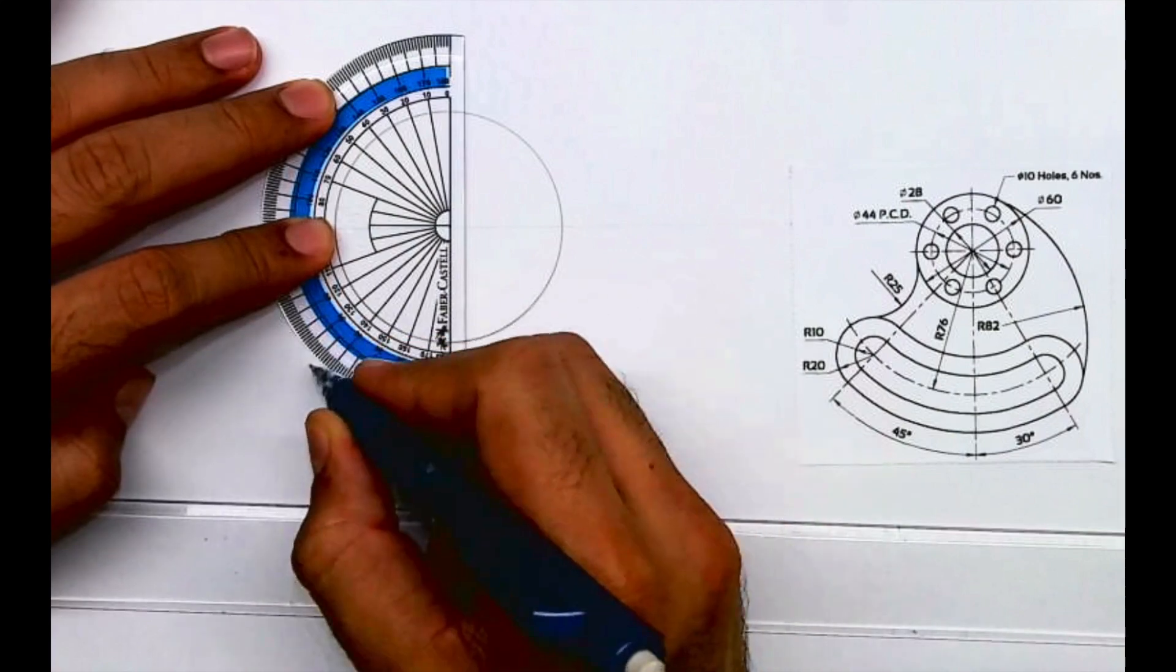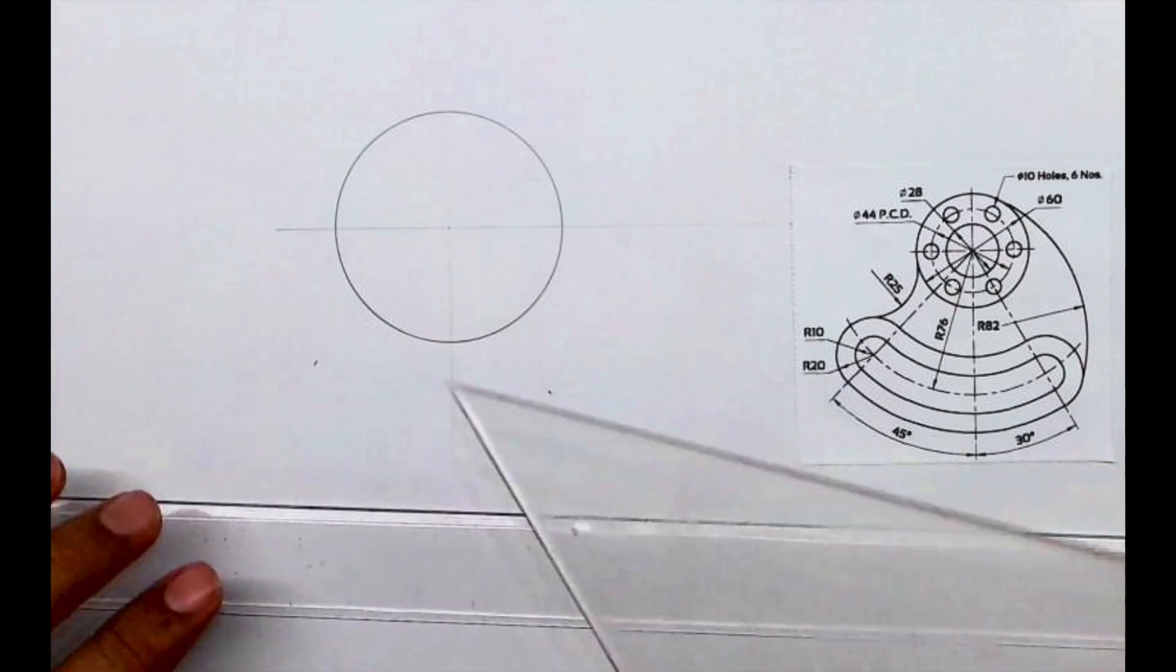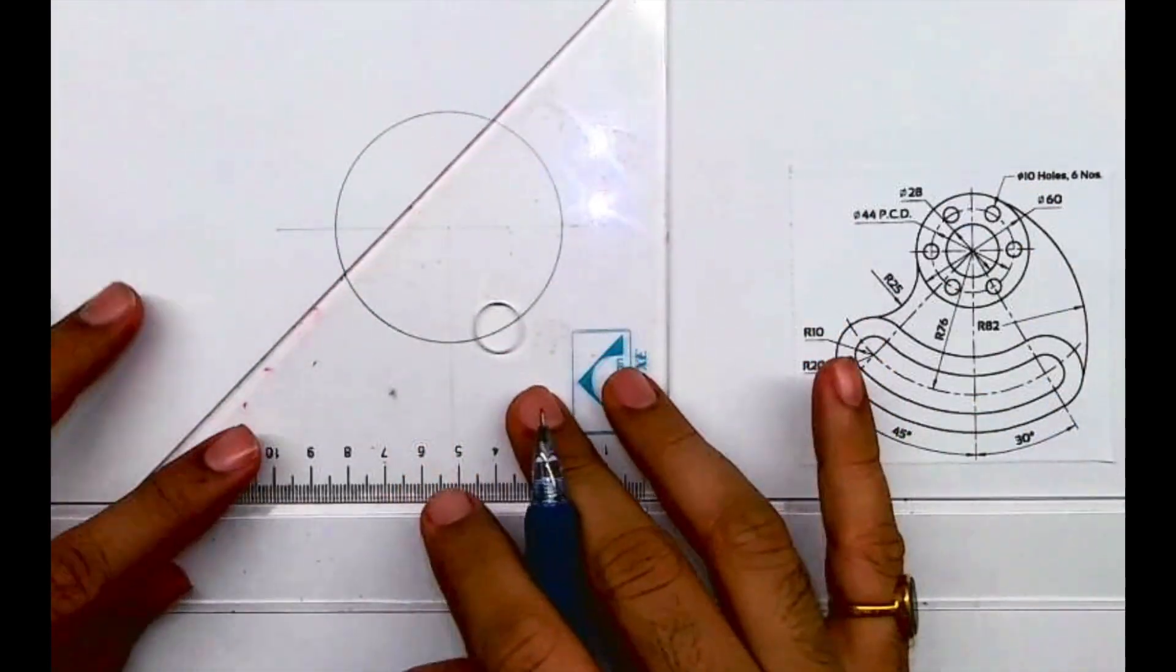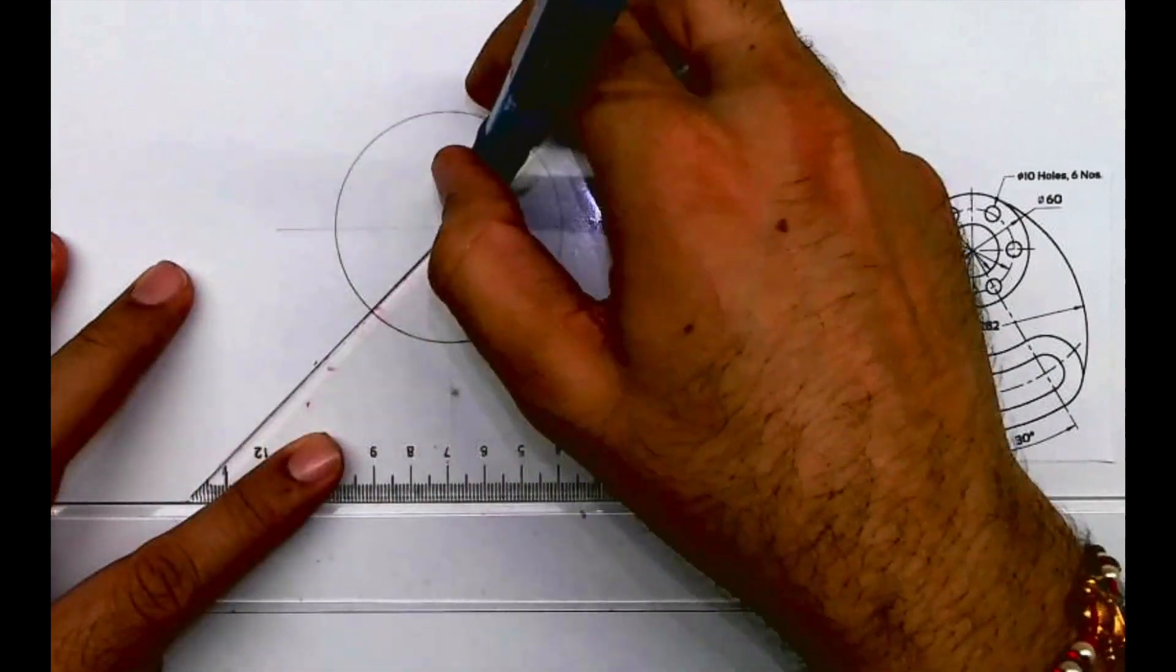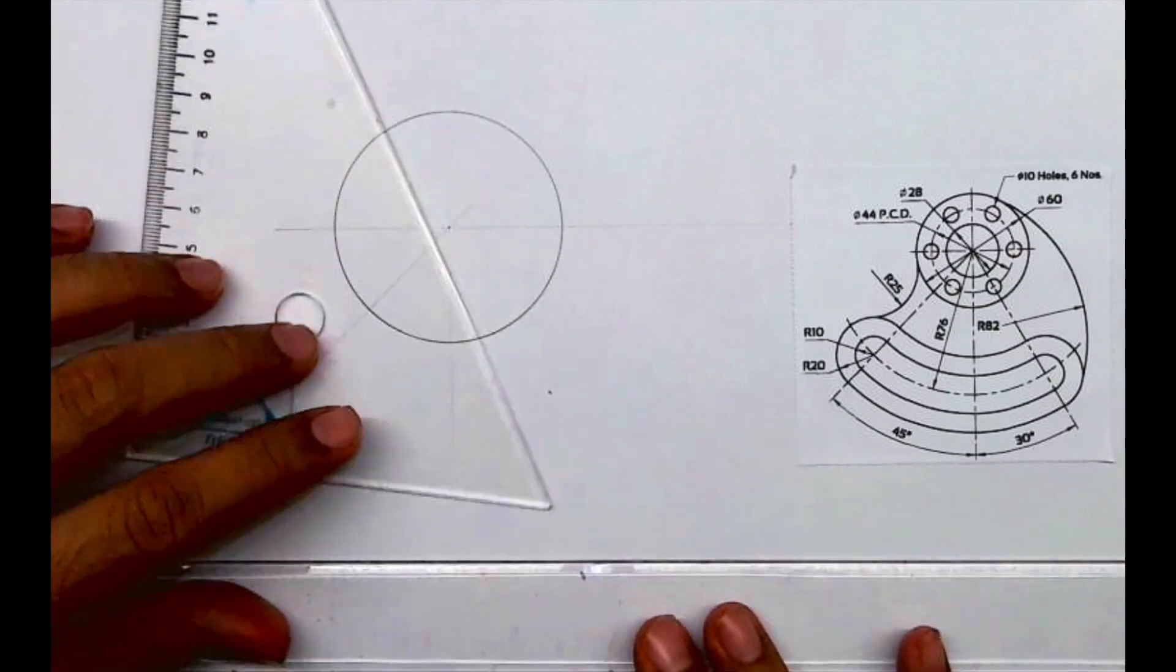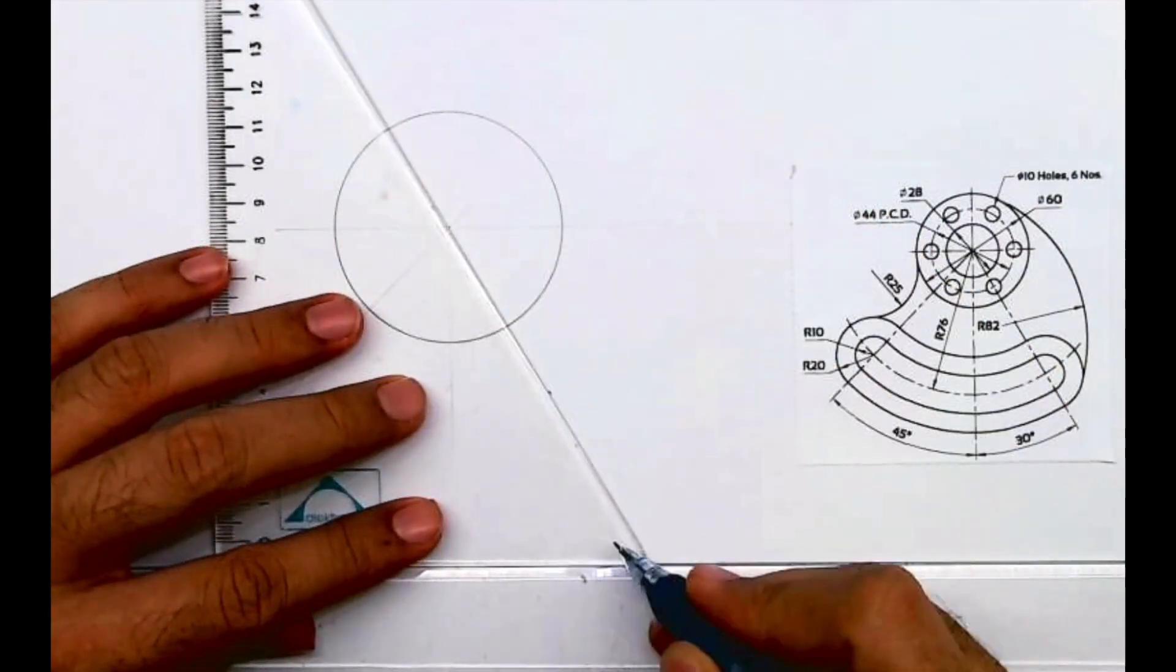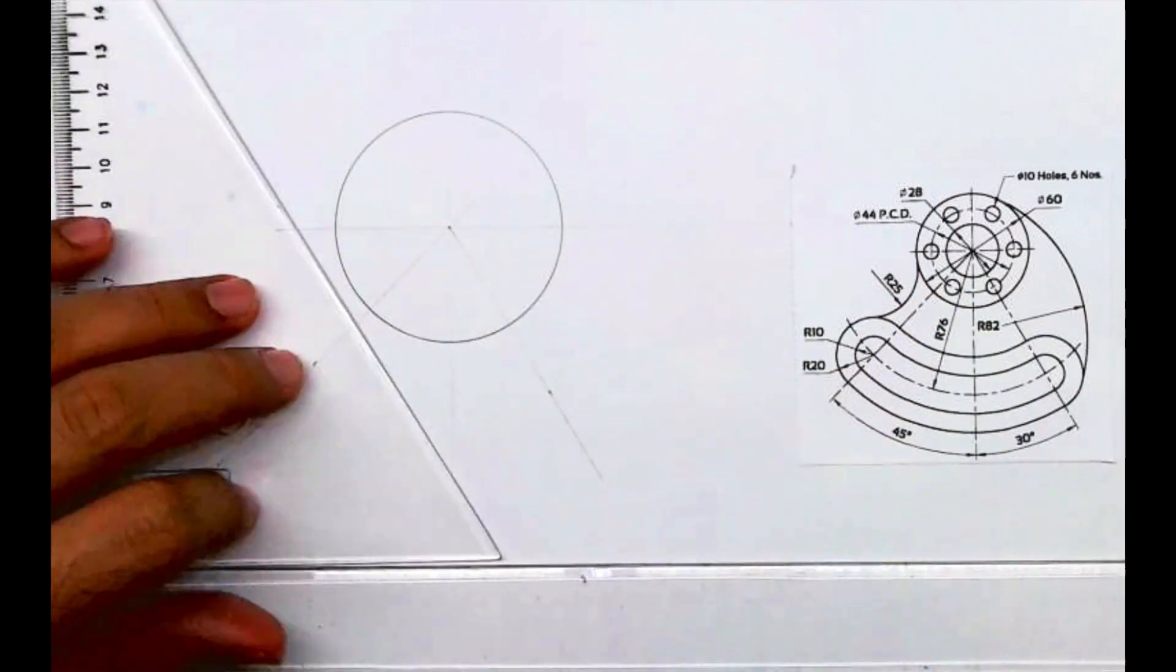So you mark 30 and 45 like this with protractor, or you can use set square also. So you draw 45 degree and you draw 60 degree with horizontal, so 30 degree with vertical like this.